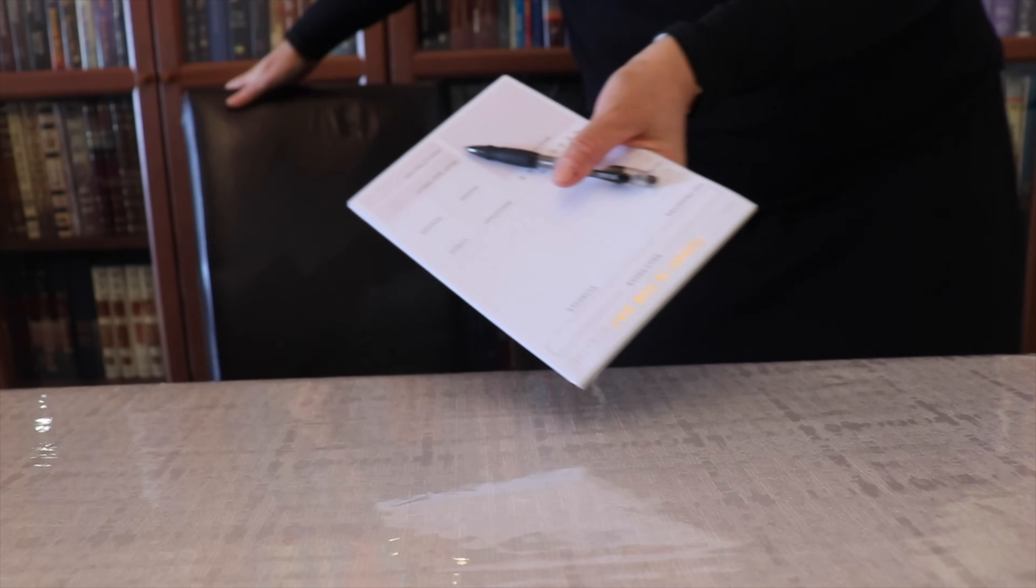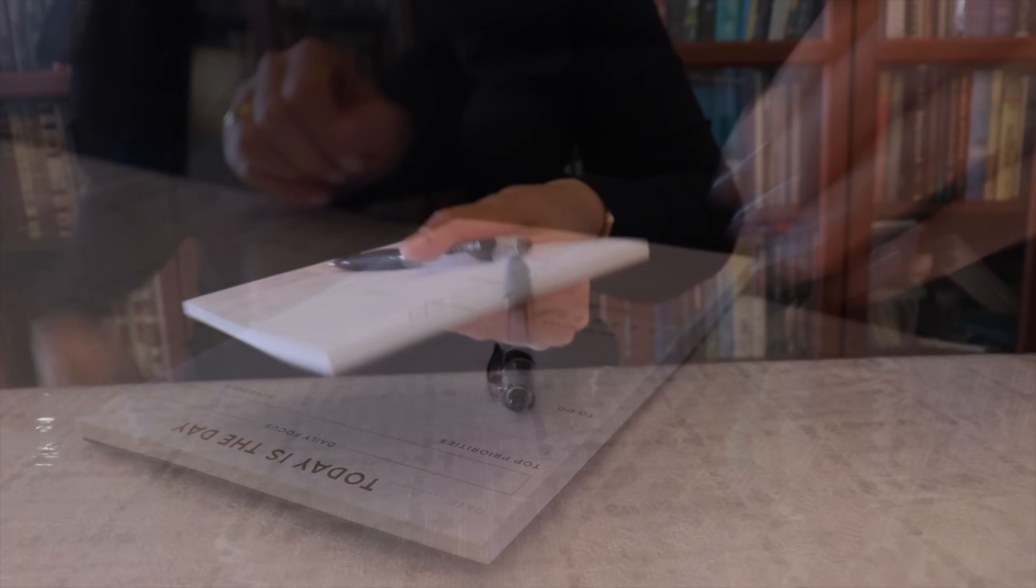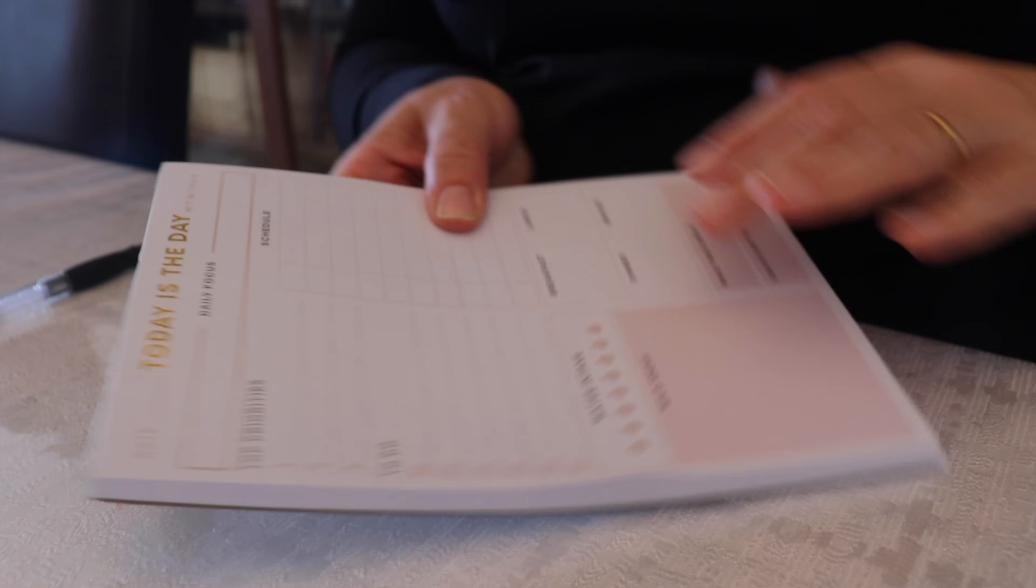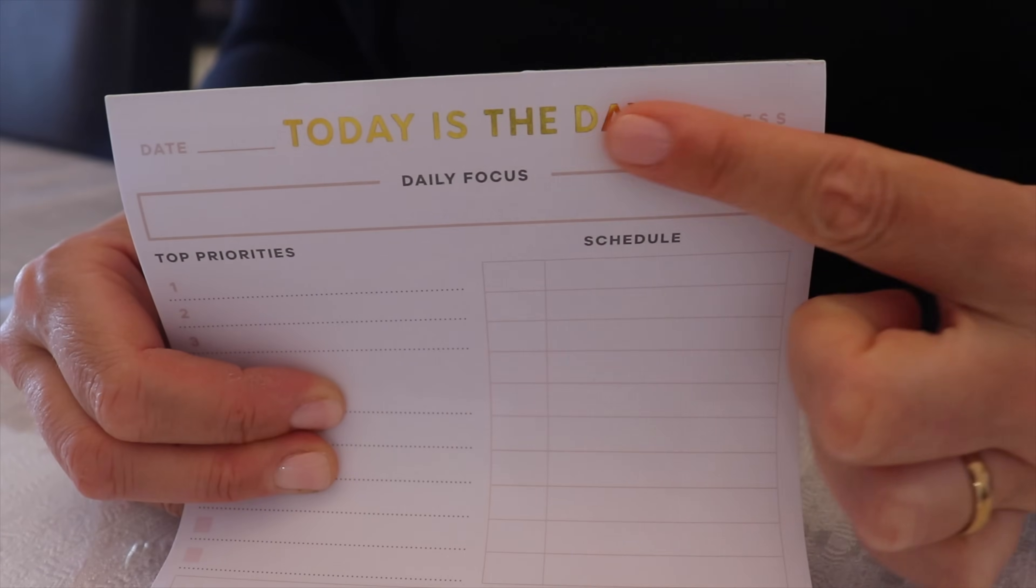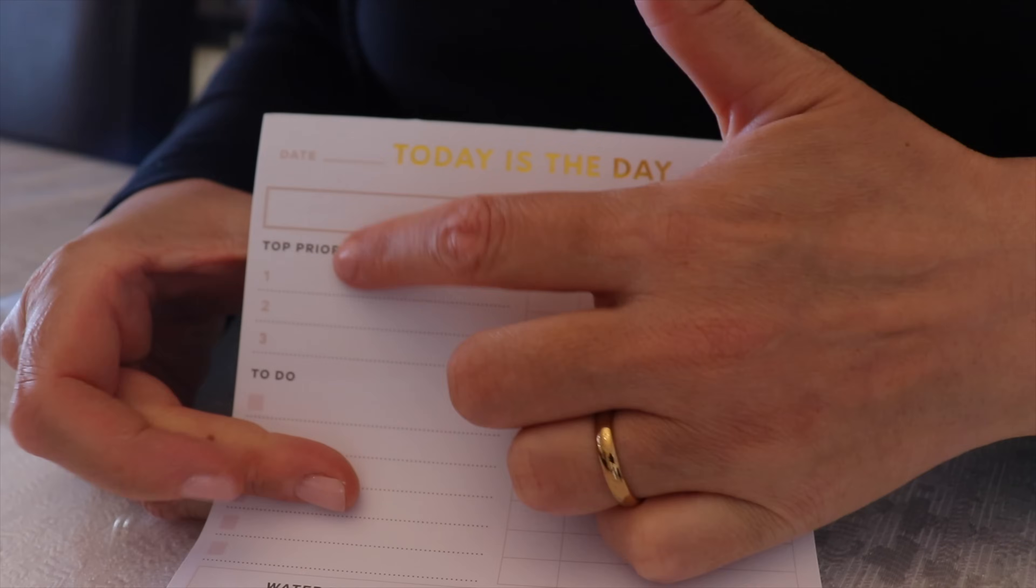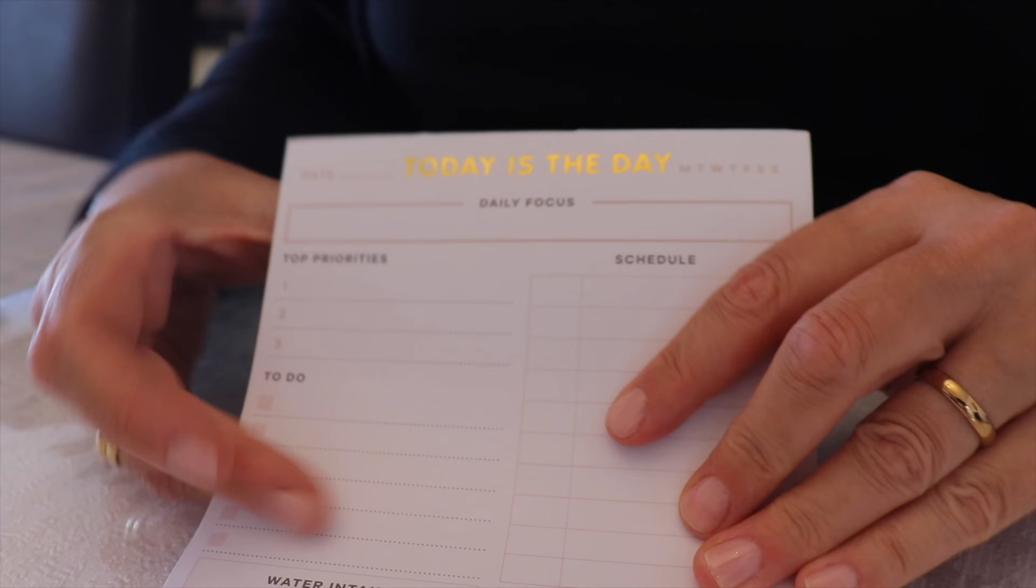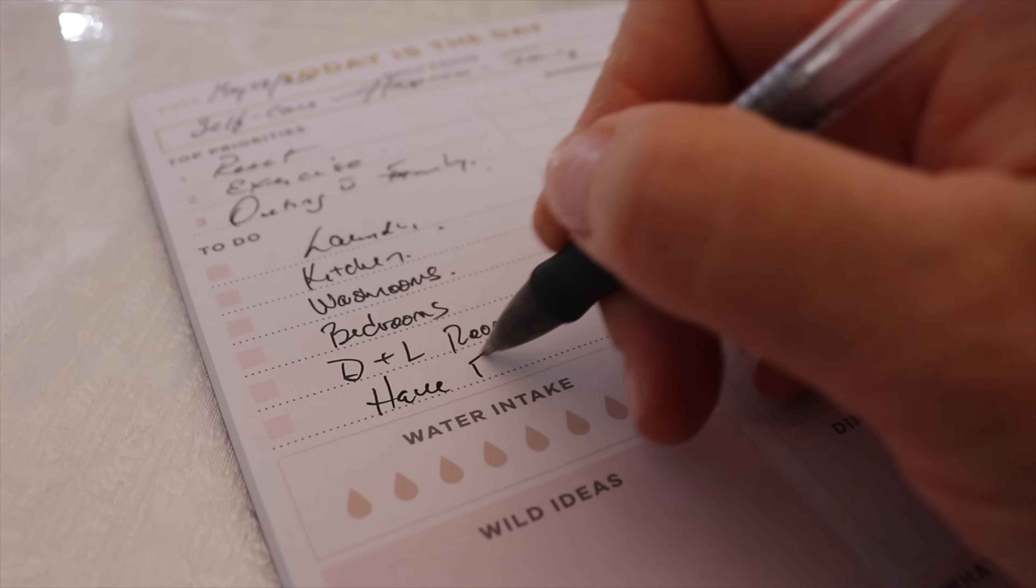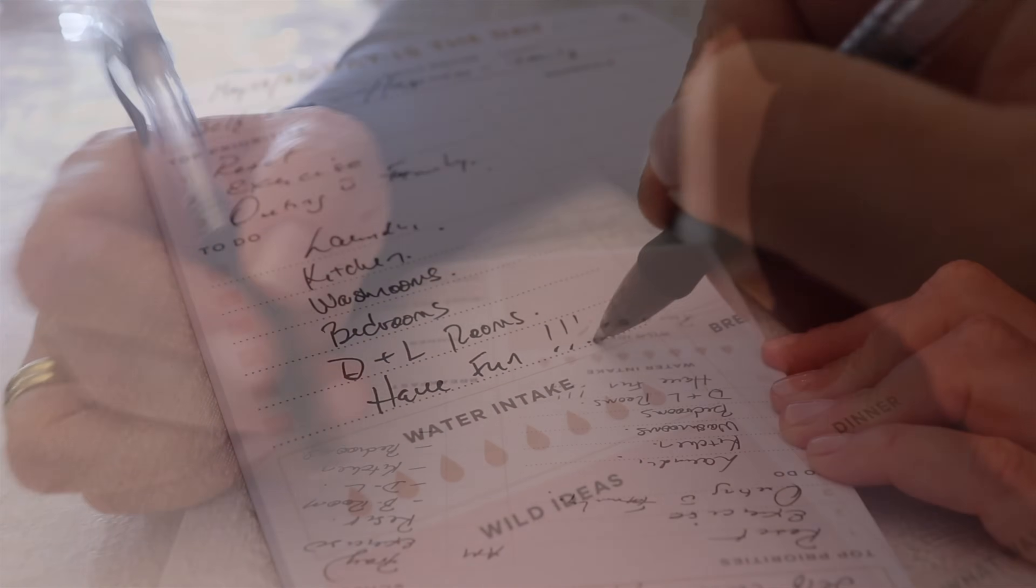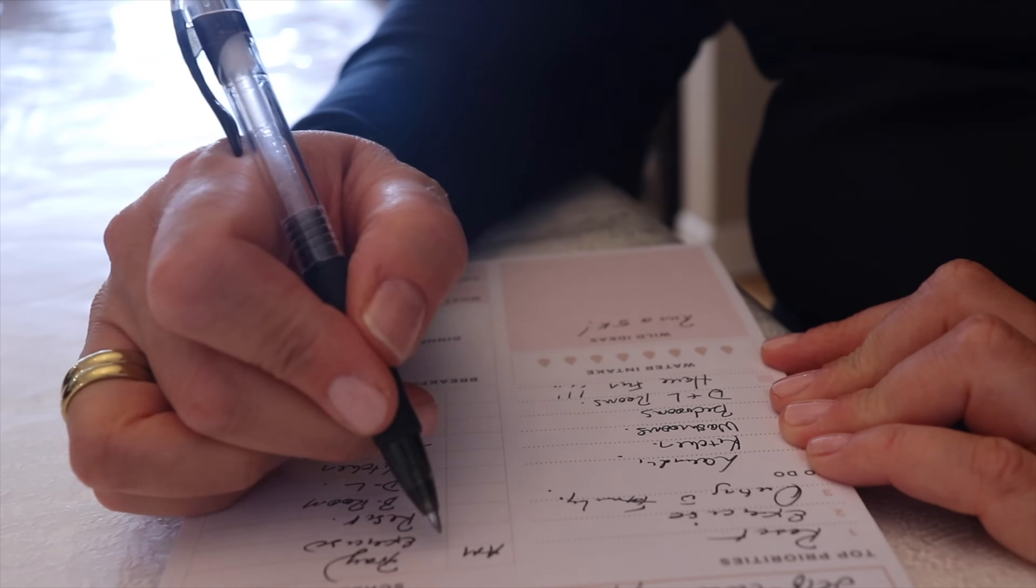Once the spiritual side of my weekly reset routine is taken care of, I do a short to-do list. I have been loving this new planner that is so pretty and useful, with its daily focus, top three priorities, a short to-do list so I do not get overwhelmed, and a time block schedule for the day.